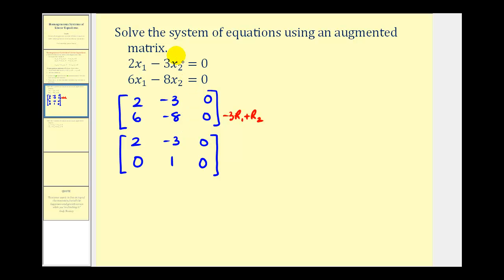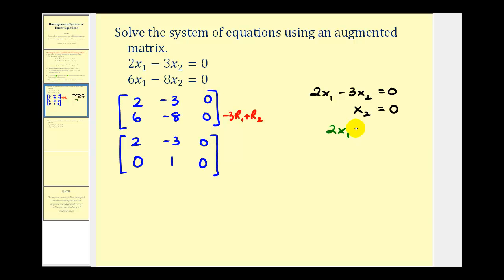Going back to our system for a moment — notice how we have two variables and two equations, which means we have zero free variables. Rewriting the system: two x sub one minus three times x sub two equals zero, and x sub two equals zero. Since x sub two equals zero, the first equation becomes two times x sub one equals zero, which means x sub one must equal zero. So this is the trivial solution, where x sub one equals zero and x sub two equals zero.